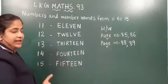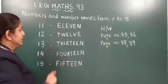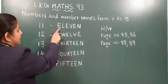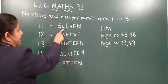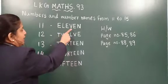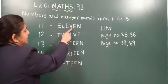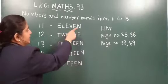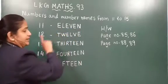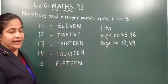One one — eleven. Now the spelling once more: E, L, E, V, E, N. Eleven.